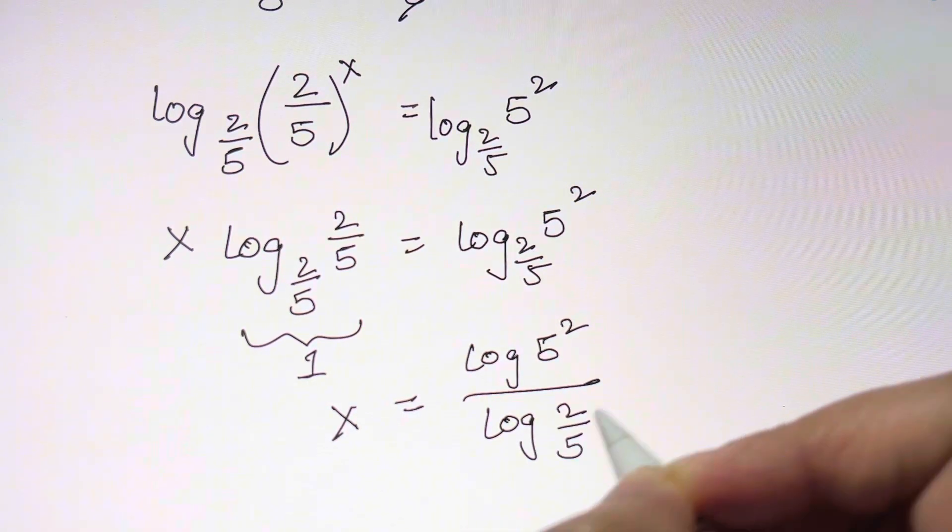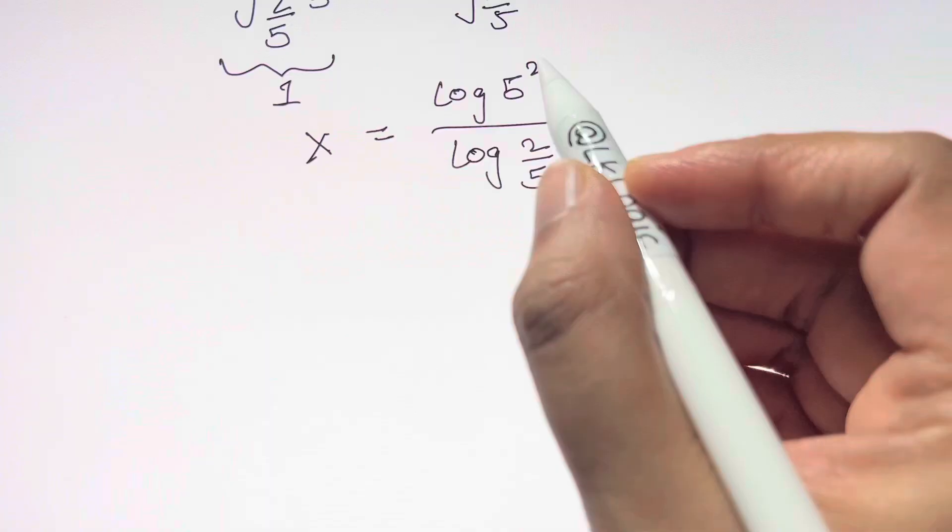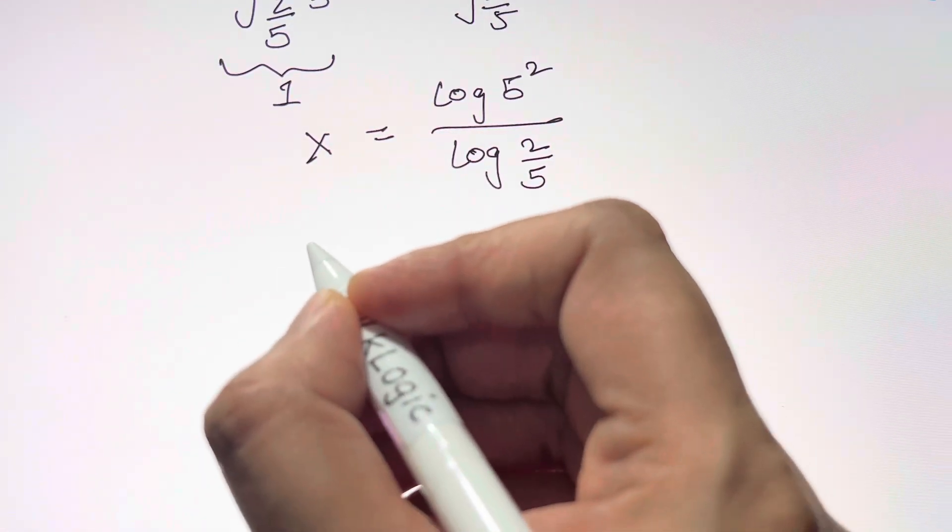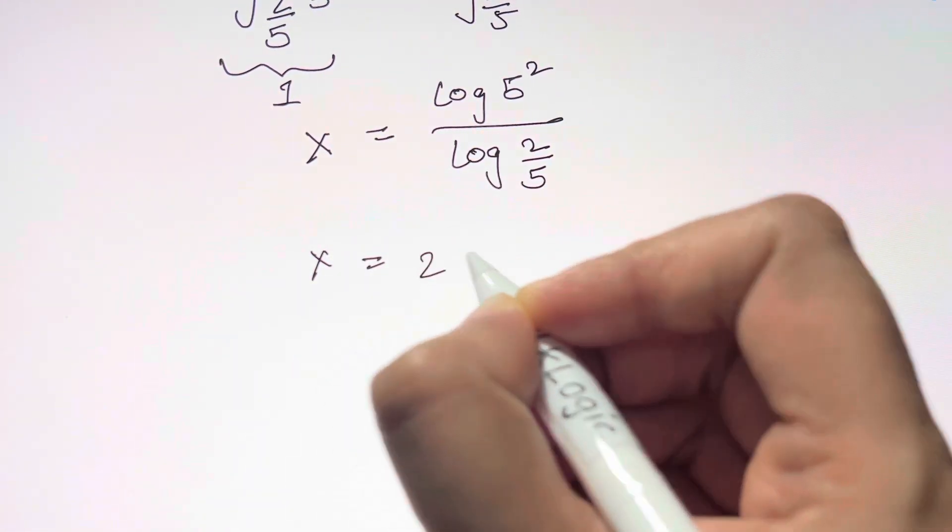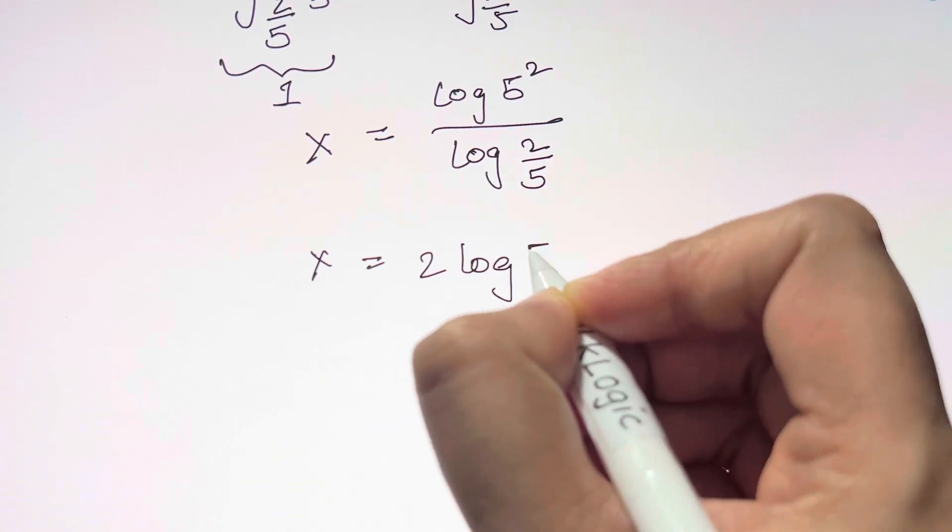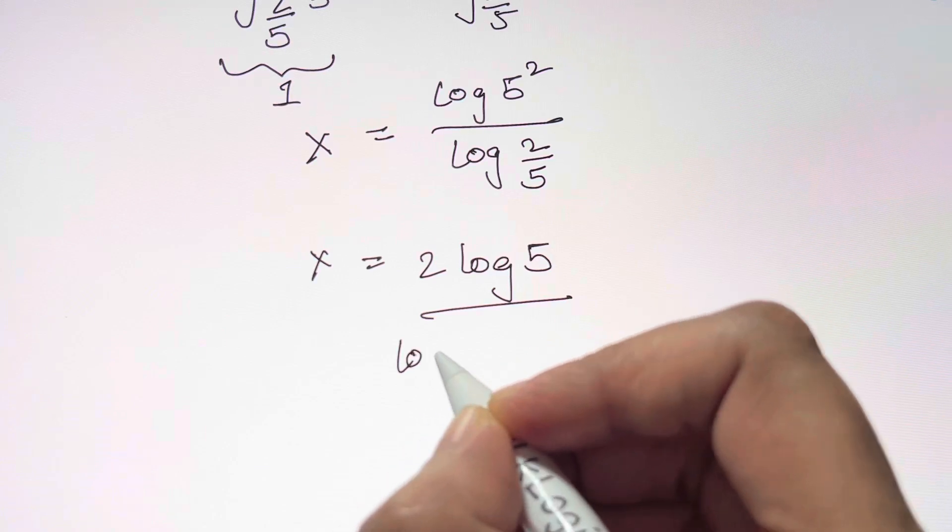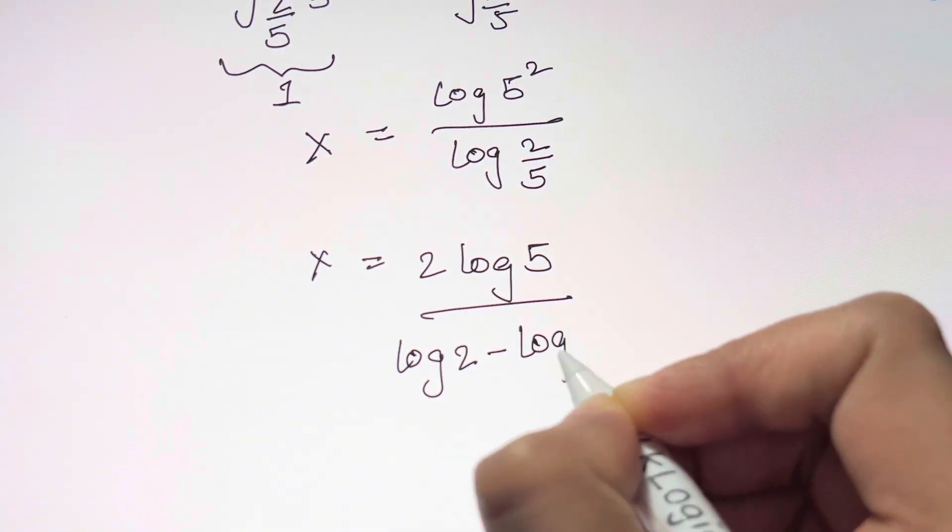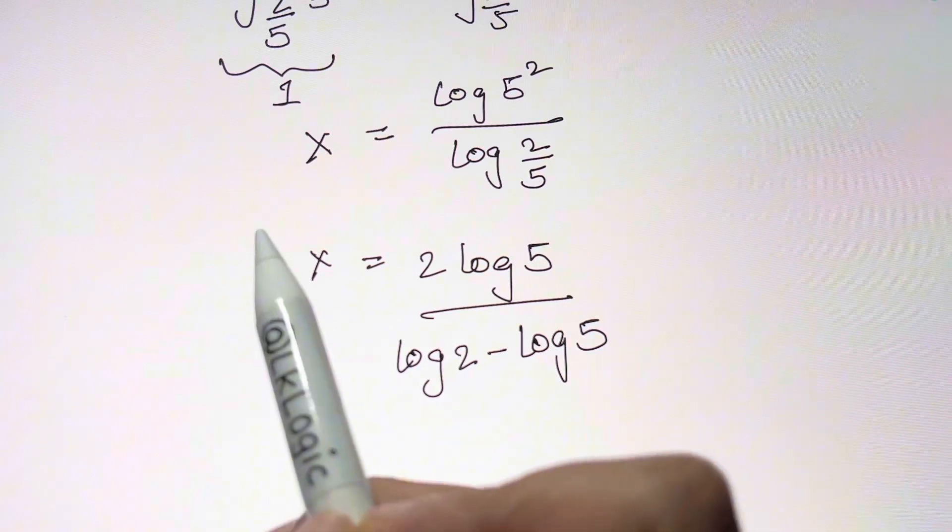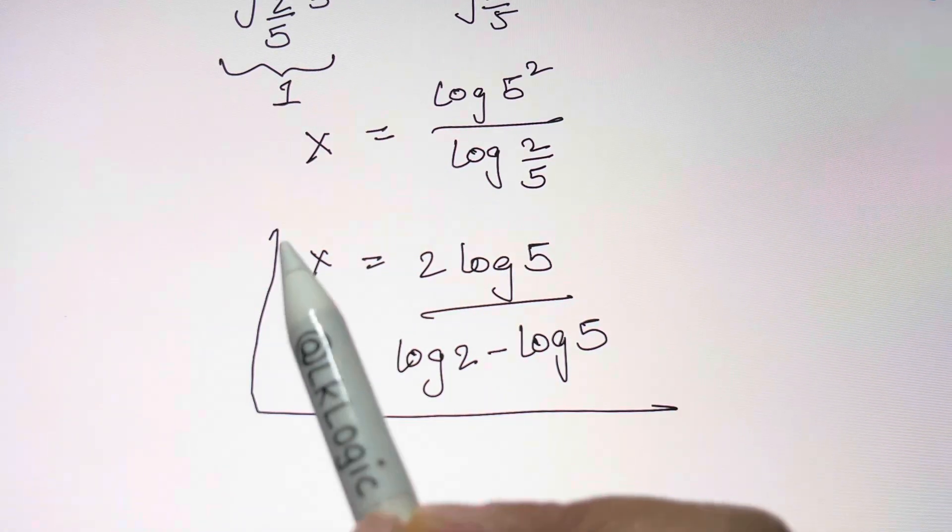This is another law of exponents: bring the exponent to this side, so you have x equals 2 log 5 over... this can be written as log 2 minus log 5, and that's your answer.